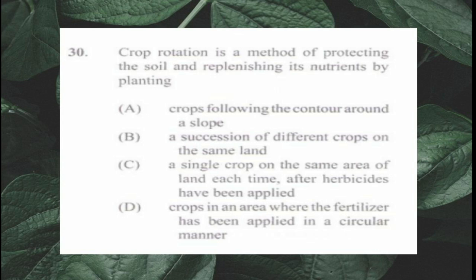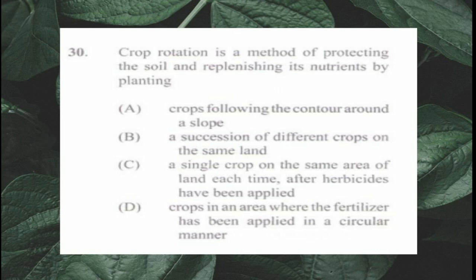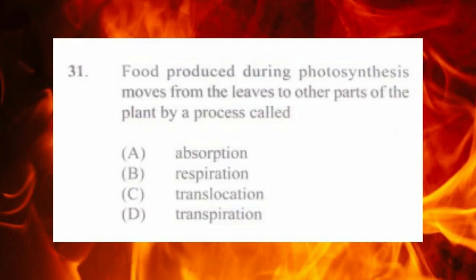Question number thirty: crop rotation is a method of protecting the soil and replenishing its nutrients by planting b) a succession of different crops on the same land. For example, after a leaf crop like callaloo, you would not replant another leaf crop; instead you would plant a fruit crop or root crop.